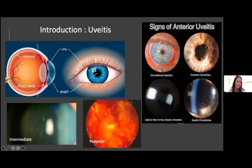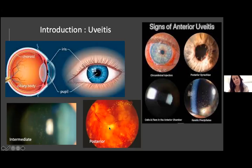Intermediate uveitis is inflammation essentially in the posterior chamber, starting at the pars plana near the ciliary body and extending throughout the vitreous body. On slit lamp, we see cells and debris behind the lens within the vitreous. Posterior uveitis comprises retinitis, choroiditis, vasculitis, and optic nerve head swelling.